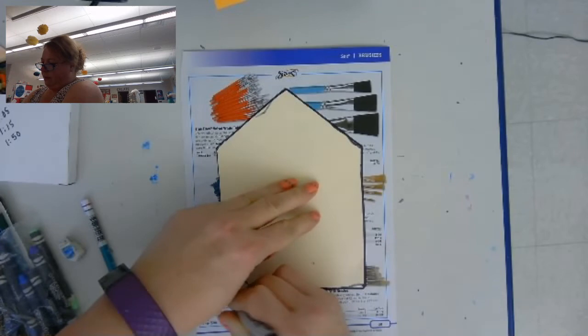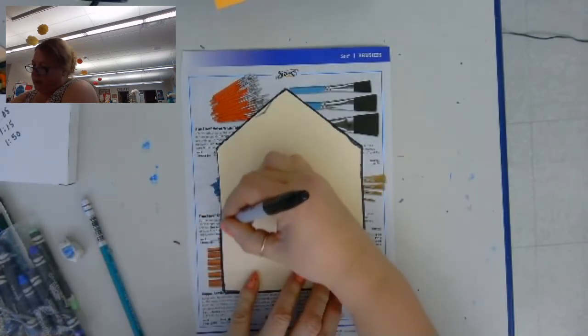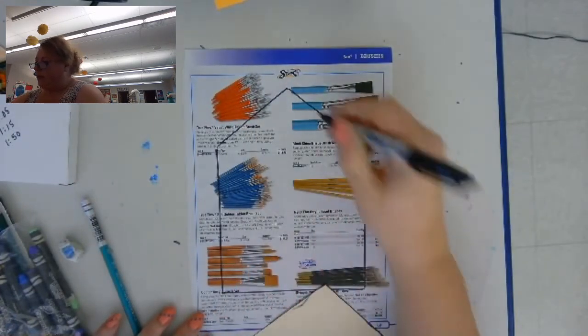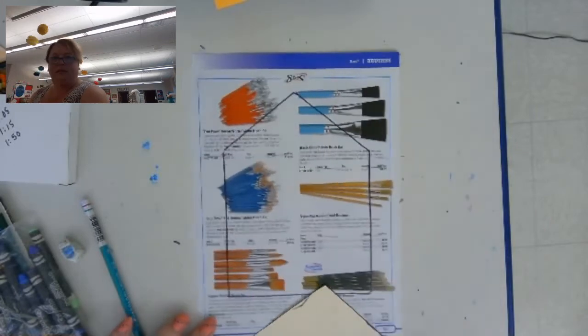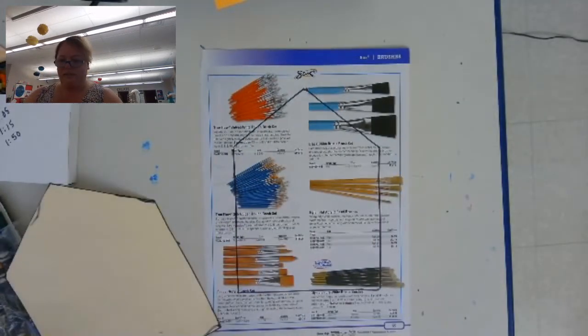You can always have a grown-up help you with this part. Or they could use a ruler so that they get straight lines. Okay, so you can see the house is traced on there.